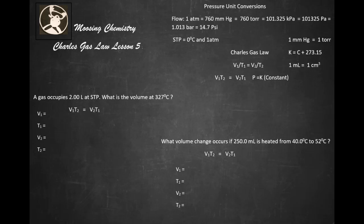Hi, welcome back to Morning Chemistry. This is Charles Gas Law Lesson number five. Again, you can look at the flowchart up there. One atmosphere equals 760 millimeters of mercury, which equals 760 torr, which equals 101.325 kilopascals, which equals 101,325 pascals, which equals 1.013 bar, which equals 14.7 psi. Standard temperature and pressure when mentioned is zero degrees Celsius and one atmosphere. One millimeter mercury equals one torr. K equals C plus 273.15. One milliliter equals one cubic centimeter.